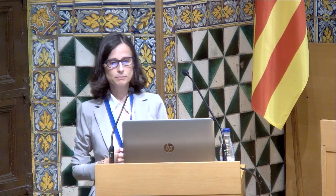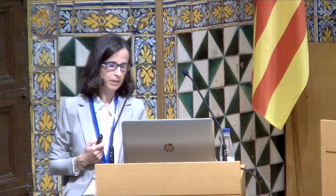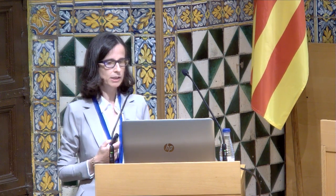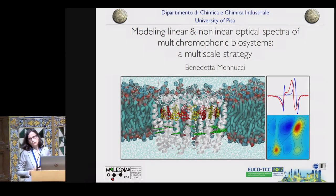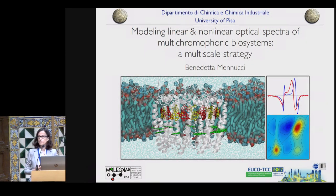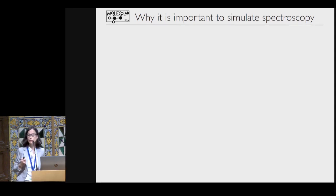My talk will be about part of the research we are doing in my group in Pisa on the modeling of optical properties of multi-chromophoric biosystems. So, why is it so important to be able to simulate spectroscopy?